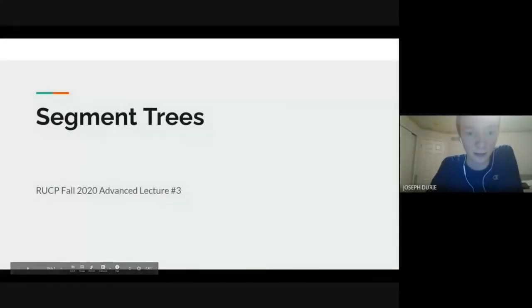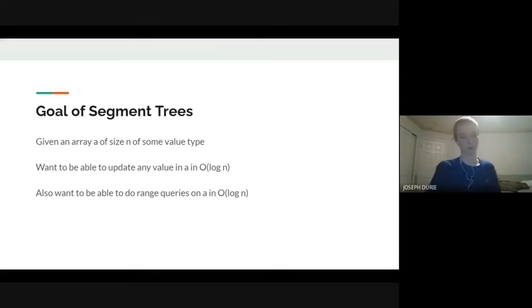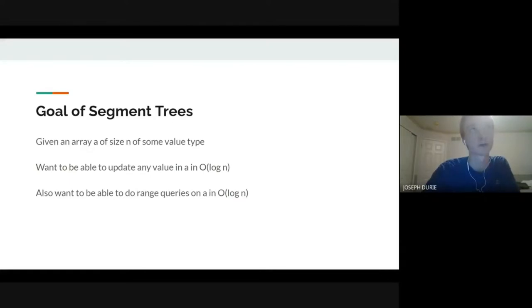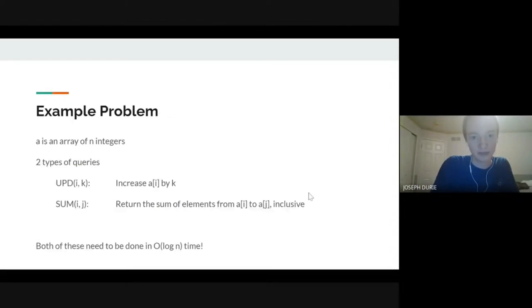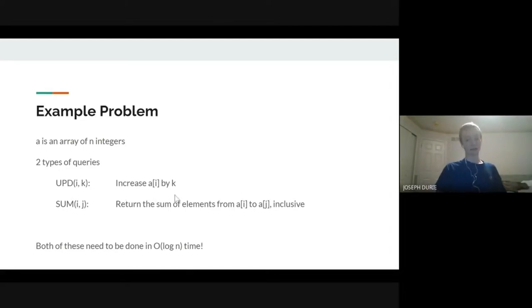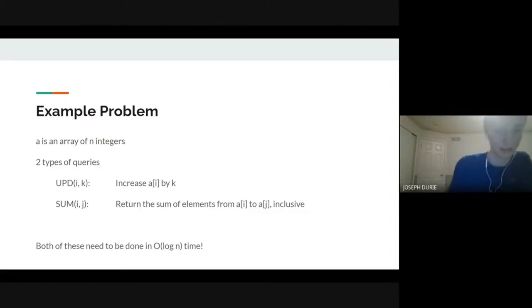Welcome to our lecture on segment trees. The goal is: you have some array A of size N, and you want to do two things in O(log N). First, update any value in A. Second, perform a range query — like a range sum or range maximum — for any arbitrary sub-range of A. A concrete example: increase A[i] by some value K, or return the sum of elements from A[i] to A[j] inclusive, both in log N time.